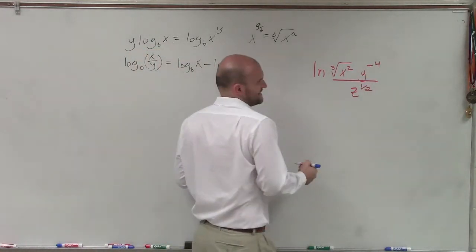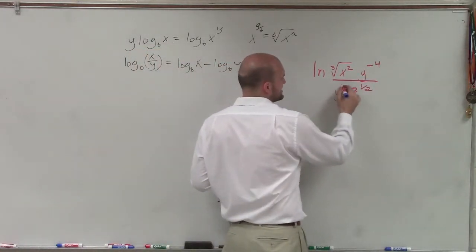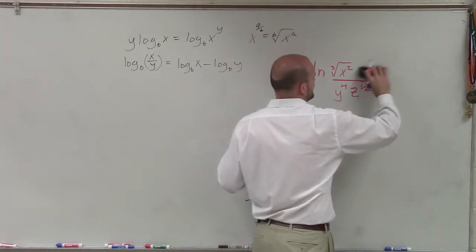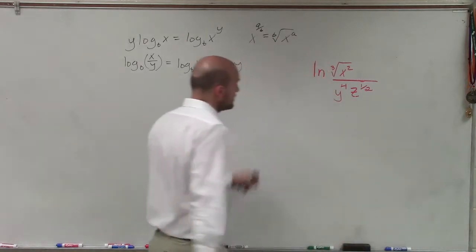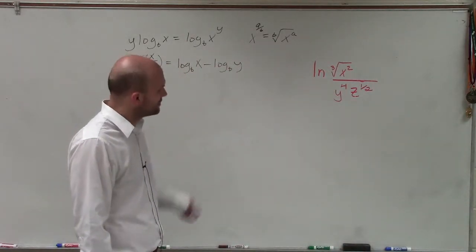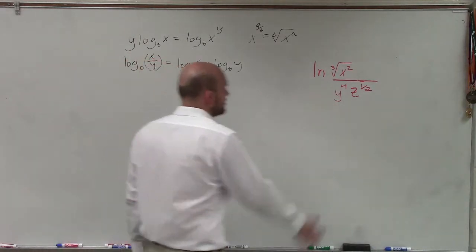So remember, when I have a y to the negative fourth power, I can rewrite that as the positive as long as I switch it down to my denominator. So I'm going to rewrite that there. So now I just have y to the fourth, the cube root of x squared, divided by y to the fourth, and the z to the 1 half power.